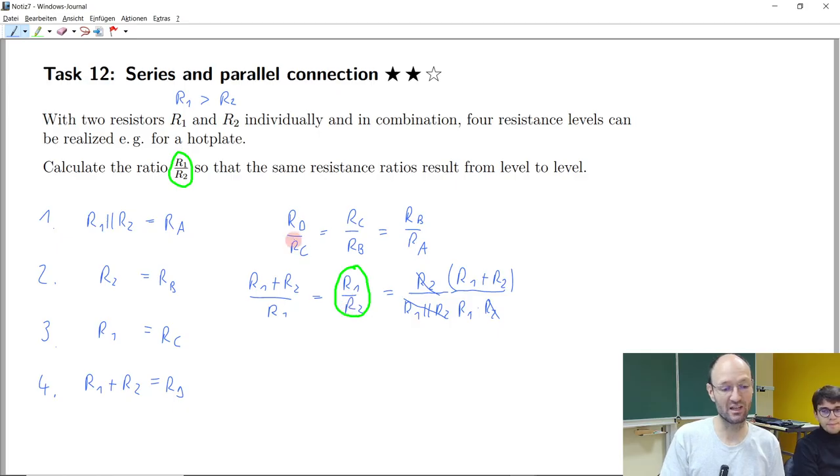So what I would propose is we give this ratio a new name and call it, for example, K, small K.